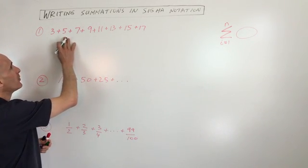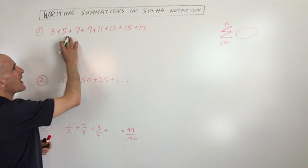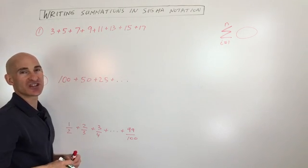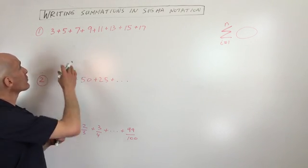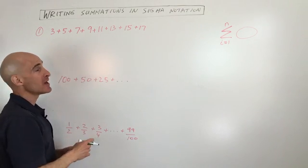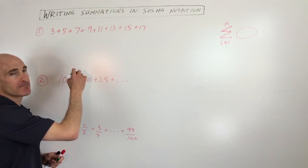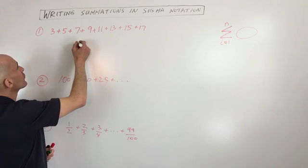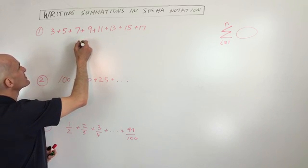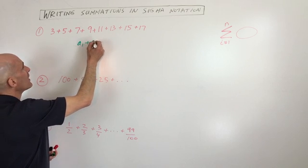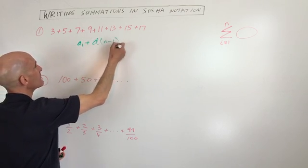So in this first example, notice what's happening here. We're adding two each time to get to the next term. So we need a formula for any term in this sequence. So what I'm going to do here is I'm going to use the arithmetic sequence formula.